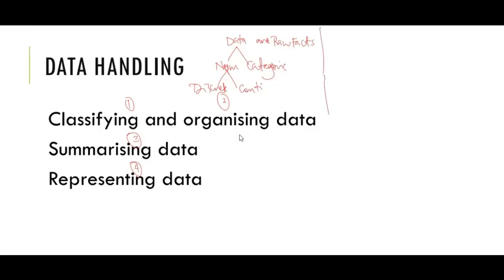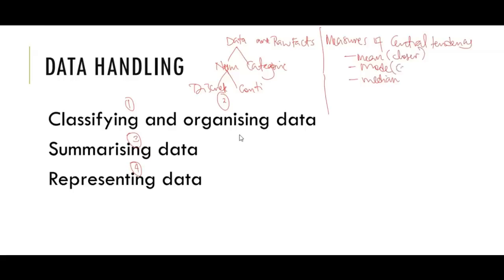We shall look at measures of spread and measures of central tendency. Measures of central tendency are three — I usually call them triple M: mean, mode, and median. Mean best represents data when numbers are closer to each other. Mode is used when the data is categorical. Median is used when we have what we call an outlier.